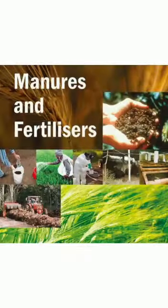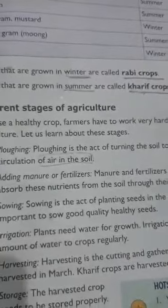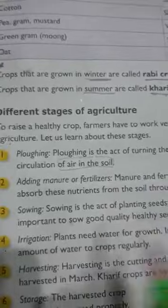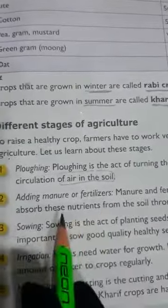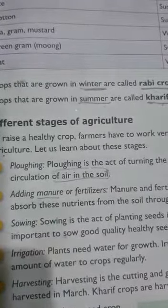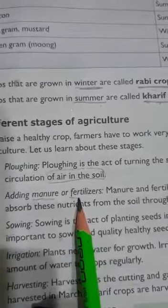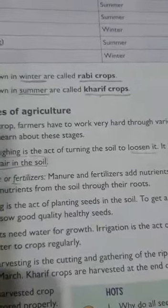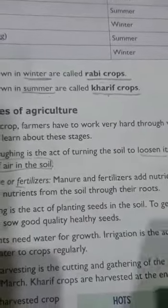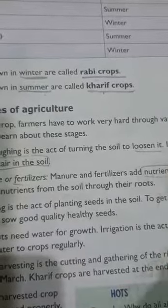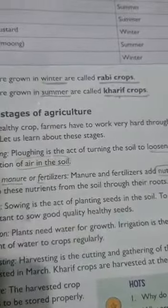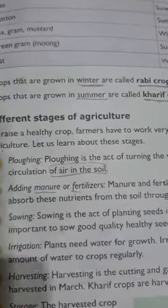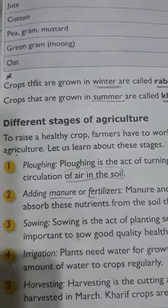The second stage is adding manure or fertilizers — M-A-N-U-R-E, F-E-R-T-I-L-I-Z-E-R-S. Without this stage, the crop cannot grow properly. Manure and fertilizers add nutrients to the soil. Plants absorb these nutrients from the soil through their roots. Manure is like dung — guber — that is added to the soil.